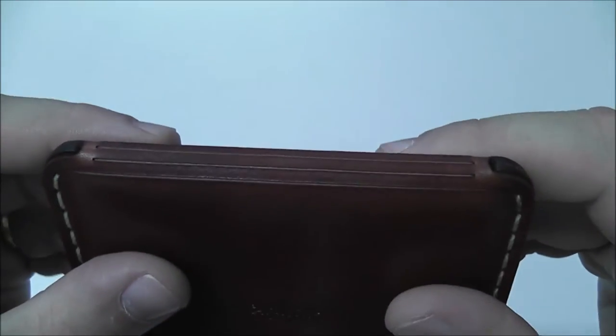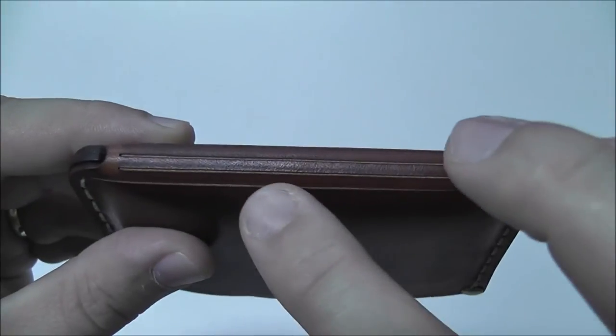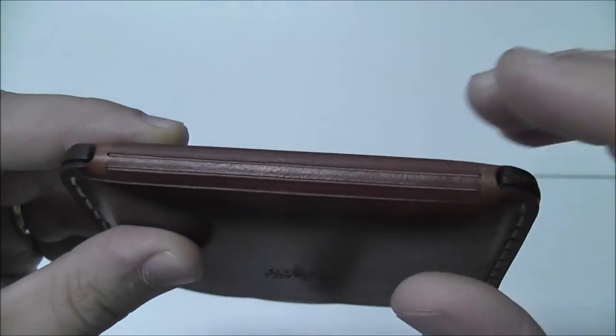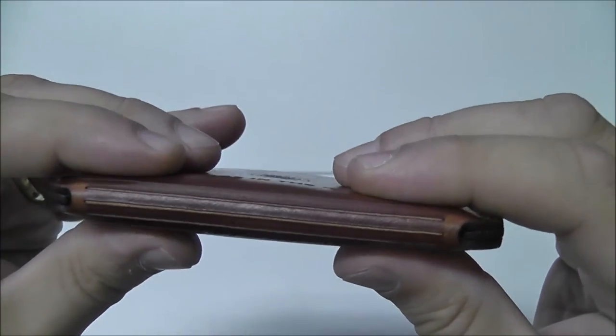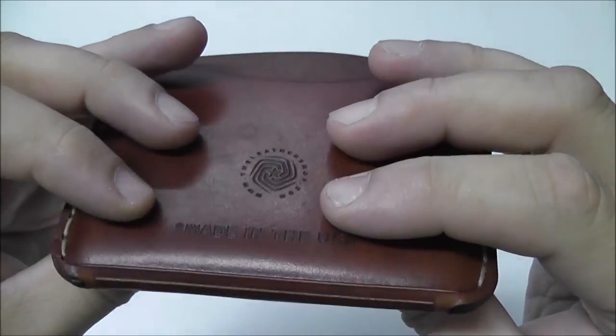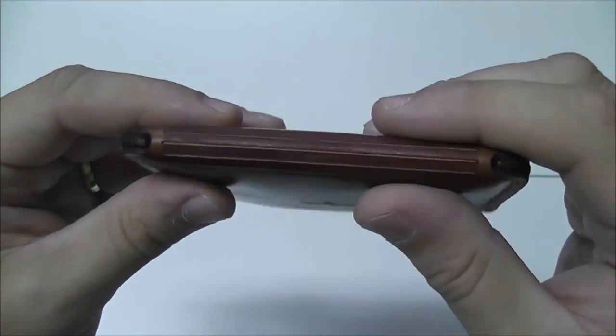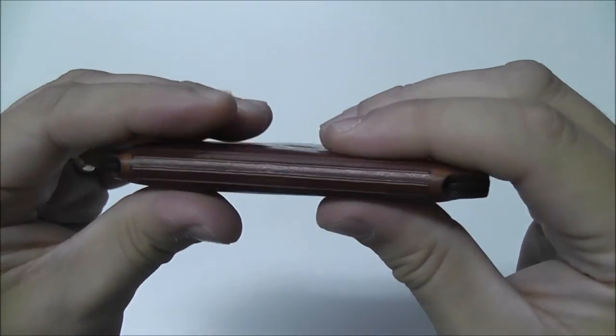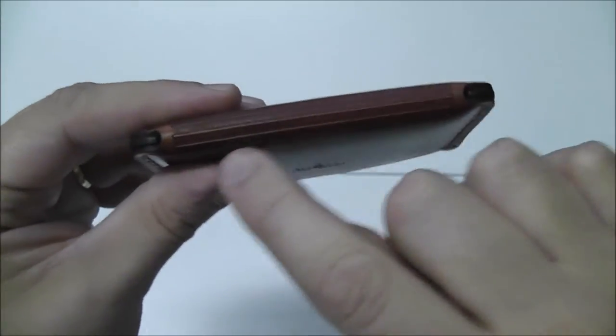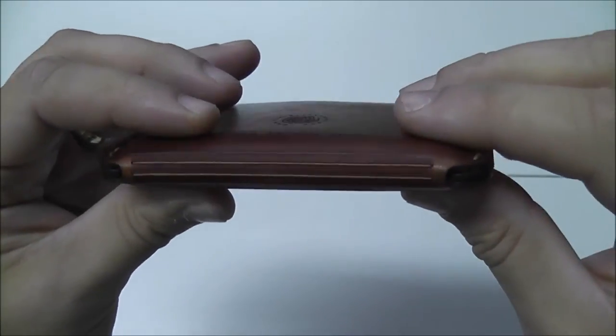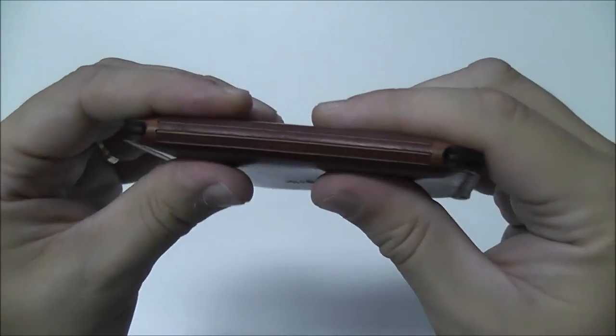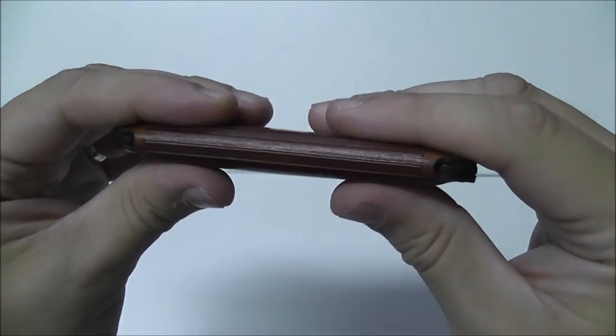Also, there are some similar lines here on the bottom of the wallet, and these lines are not only used for giving it cool looks, but they're also used to easily keep the leather folded. Each one of these lines is particularly made to help the leather stay folded and not put extra pressure on it.